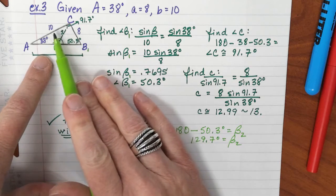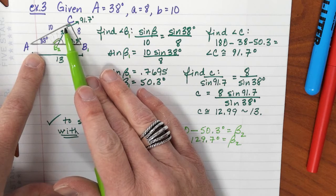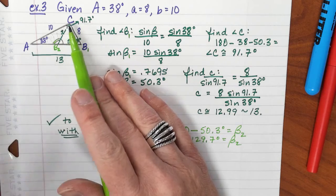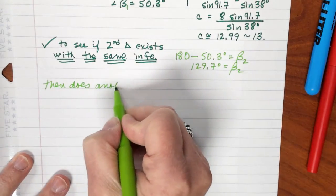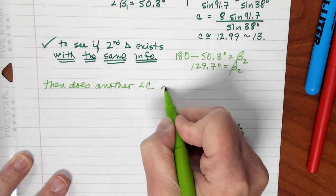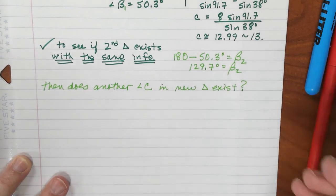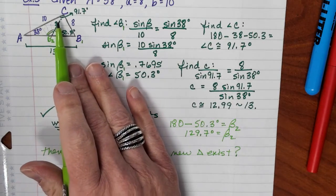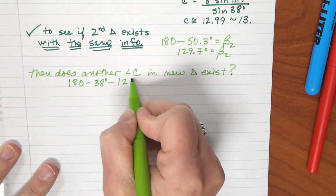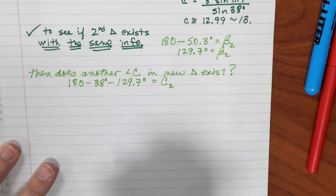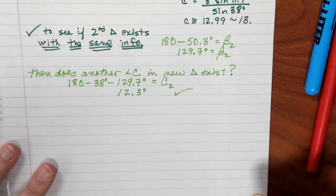Well, now if I'm looking in this triangle and I'm trying to see if it exists, if that's 38 and this is 129, I need to see if there is an angle that exists right there, that little bitty angle there at C2. So, I am determining, then does another angle C in the new triangle exist? I need to figure that out. So, I'm going to take the 180 minus the 38 minus my 129 and see if I have one up there that exists. I'm going to take 180 minus 38 minus my 129.7. That's going to give me this new angle C if it works. Well, it works. I find that that gives me 12.3 degrees. So, it does exist.